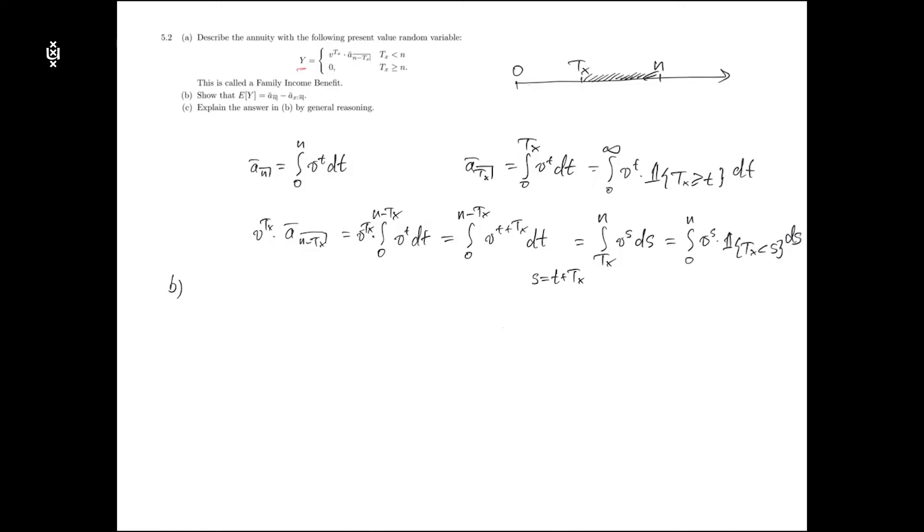For that, let me first recall that the term continuous annuity is an annuity paid continuously for the period of n or the death event of a policyholder Tx, whatever happens first.